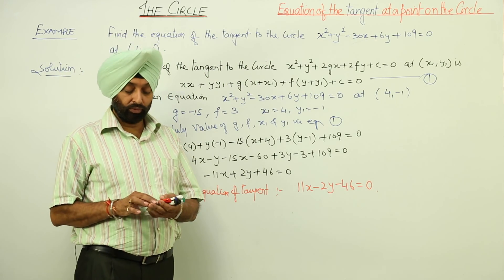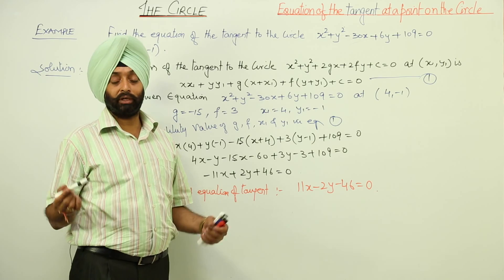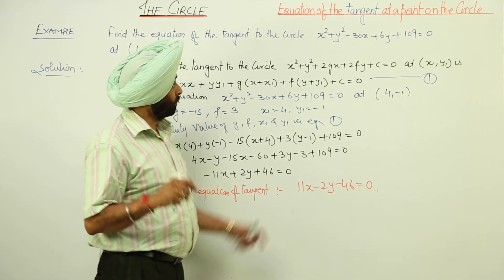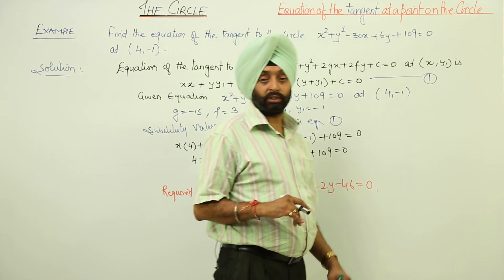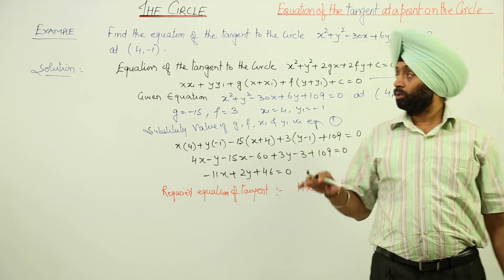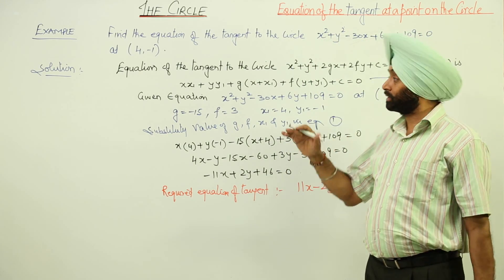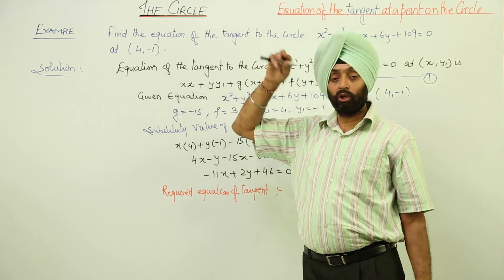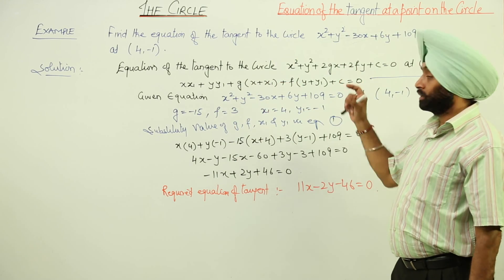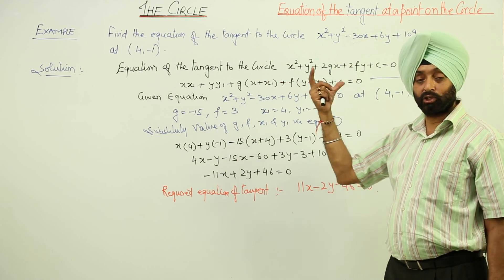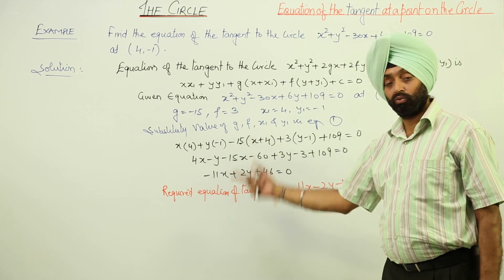The same question we can do with an alternative method by finding coordinates of the center, then with the coordinates of the center and this point, slope of the radius, then m₁m₂ = -1, slope of the tangent, and then equation of the tangent.